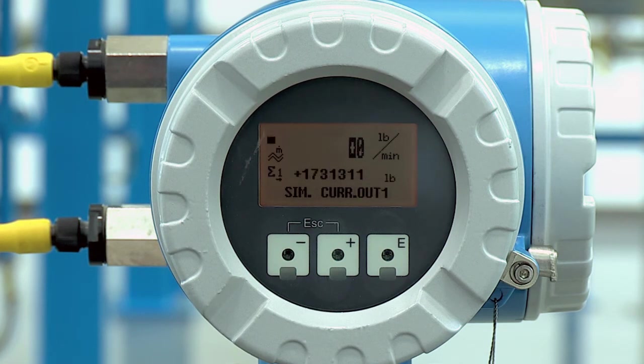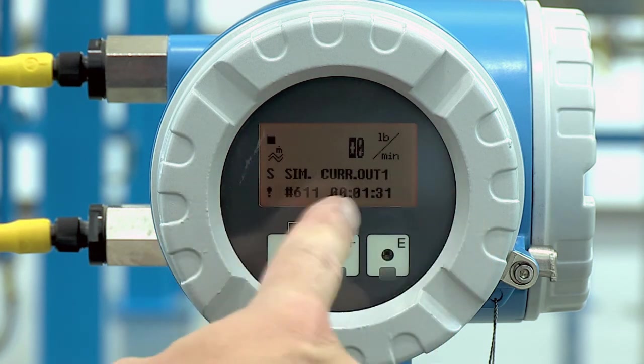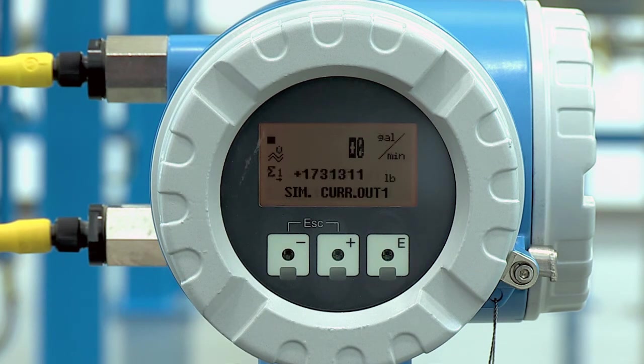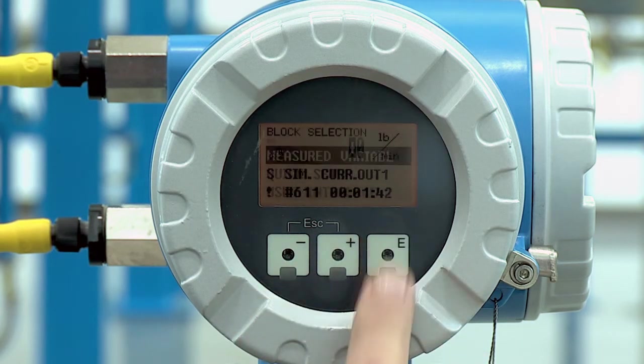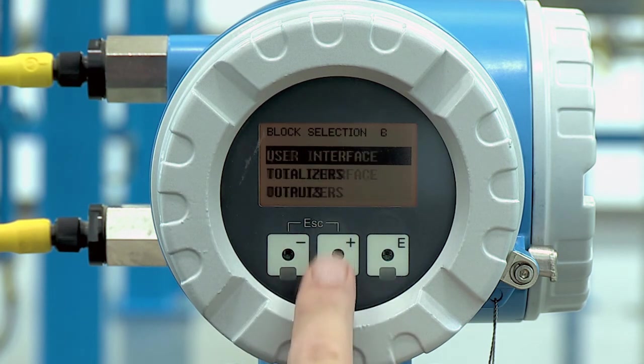The main screen will show that you are in simulate mode for output one. This is so you don't walk away from the meter and forget to change it back. So let's go ahead and push enter, we'll scroll back down to the outputs again.